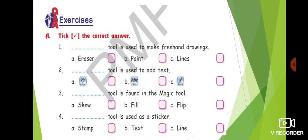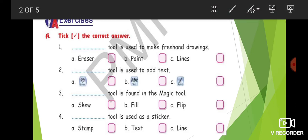Exercise A: Tick the correct answer. The first question — a blank tool is used to make freehand drawings. Among the options — eraser, paint, lines — eraser is used to erase the painting, and paint is used to draw freehand drawings. So the answer is paint. You have to tick on the paint option.